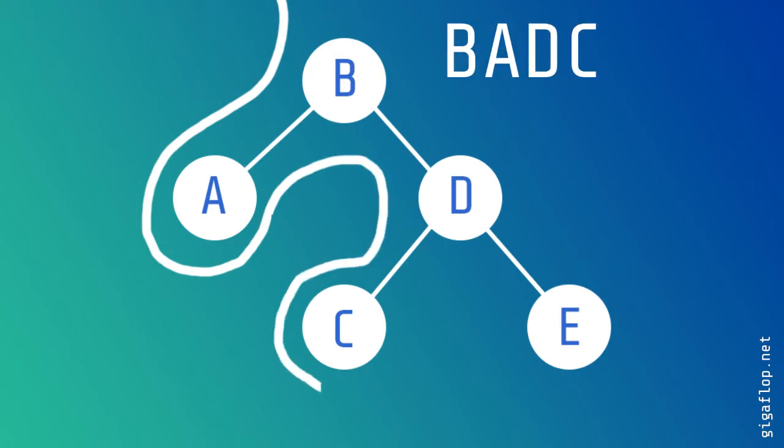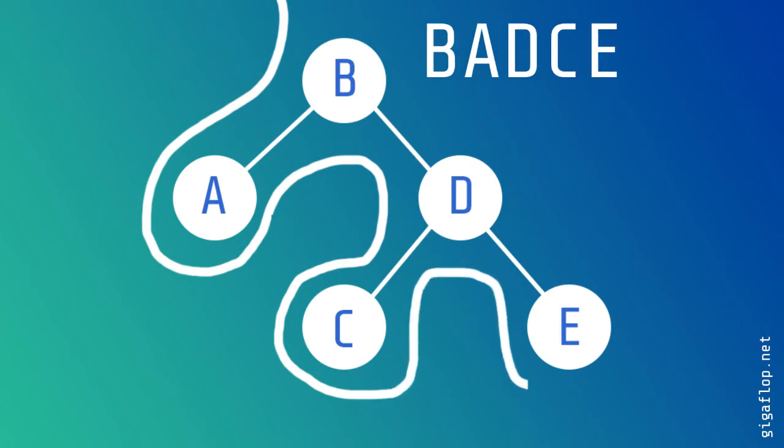Then C. And then we pass to the left of E and write that down. And then we've completed our traversal.